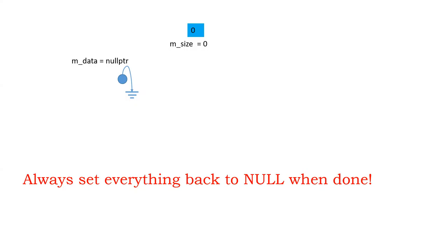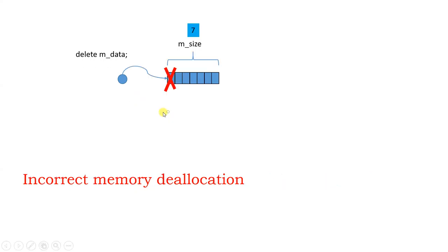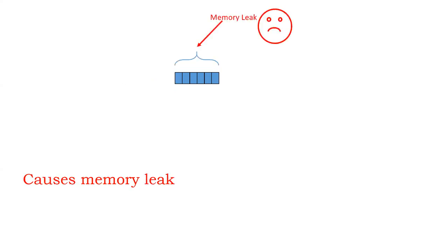Incorrect memory deallocation causes memory leaks too. If you delete an array without the square brackets, it only deletes the first element because it thinks you only have one item. The rest of the array stays sitting in memory — that's another memory leak you have to be careful about.